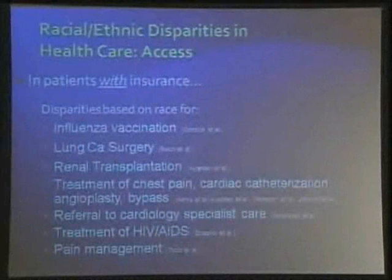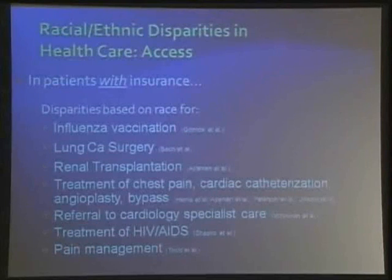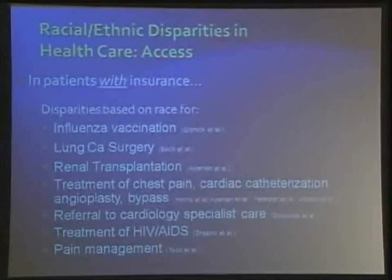I put this in because when we talk about disparities — particularly when talking to policymakers — the first thing they say is it's all about access: more hospital health, more community health centers, et cetera. But when you look at the IOM report, even patients with insurance, that doesn't fully explain the disparities that exist. So there's more going on. We need to think about this as a very multifactorial, complex issue that has different layers we need to peel apart to really make a difference.